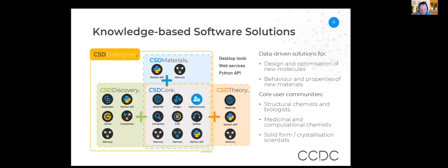The product portfolio today includes a number of different software suites targeted at problems relating to the design and optimisation of new molecules and understanding and predicting the behaviour and properties of new materials. These evolved with input from industry — primarily the pharmaceutical industry. Core user communities include structural chemists and biologists, medicinal and computational chemists, and solid form and crystallisation scientists — somewhat distant from the crystallographers generating the data. A key role is enabling that transition from data into other communities so it can be readily reused.